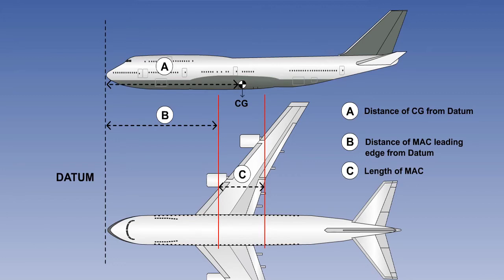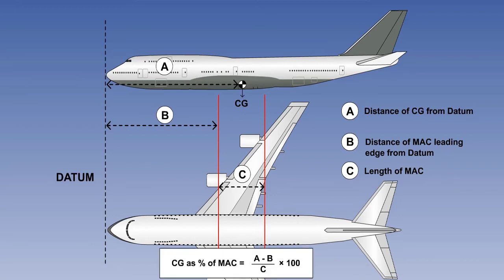We now have the three parts — A, B, and C — which make up the formula used to calculate centre of gravity in terms of percentage mean aerodynamic chord. The formula used to calculate percentage mean aerodynamic chord is: A minus B, divided by C, multiplied by 100.